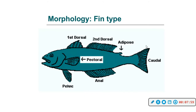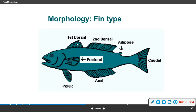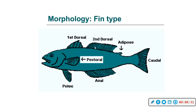You have your first dorsal fin, then your second dorsal fin, then a little adipose fin. Then you have your caudal tail, your anal fin, your pelvic fin, and your pectoral fin — these are like your arms. Sometimes you don't have two dorsal fins or an adipose fin, depending on where a fish lives.